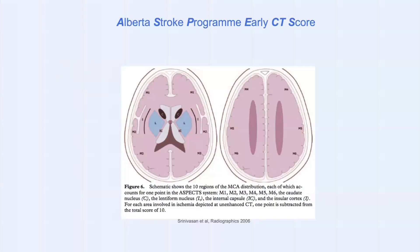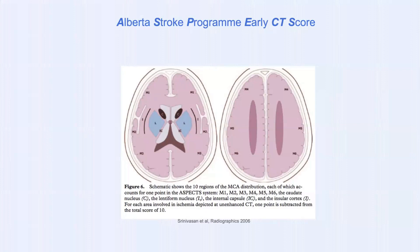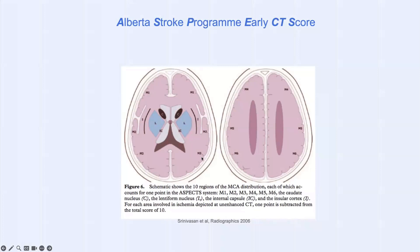ASPECTS breaks up the middle cerebral artery distribution into 10 segments. A normal brain CT would have an ASPECTS of 10, and for each segment that you lose in the MCA territory you lose a point when you see early acute ischemic changes. The first point is the insula, then the caudate, the lentiform nucleus, and the internal capsule. Then we go to six cortical areas: M1 anterior to the Sylvian fissure, M2 just posterior to it, M3 a bit more posterior, and at the supraganglionic level M4, M5, and M6. The higher the ASPECTS number, the healthier the brain tissue.